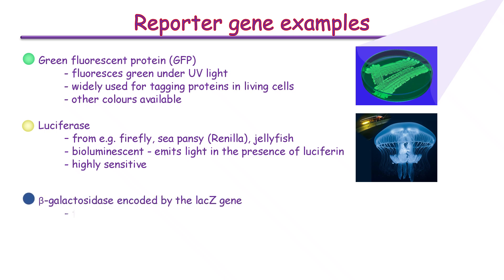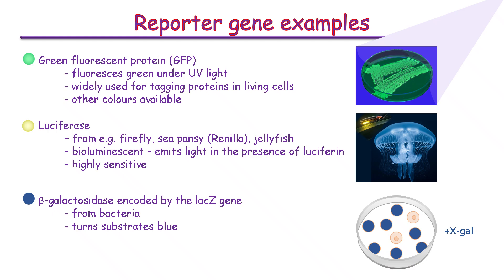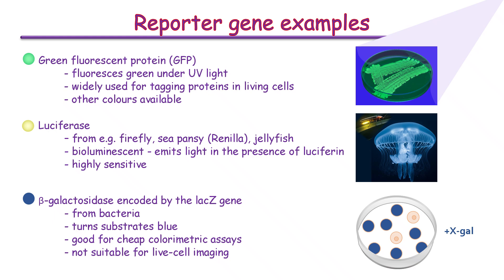Beta-galactosidase, extracted from bacteria, turns chromogenic substrates blue. Cells expressing the enzyme look normal until a substrate like X-gal is added. Beta-galactosidase cleaves X-gal into galactose and a blue-coloured dye, turning cells containing the enzyme blue, while cells lacking beta-galactosidase remain colourless. The depth of the blue colour indicates the level of gene expression. It's a stable reporter and easy to detect without fancy, expensive equipment. On the other hand, it's not suitable for live cell imaging or tracking dynamic gene expression, because the cells need to be lysed or fixed for most assays.